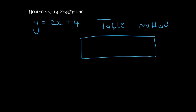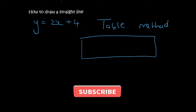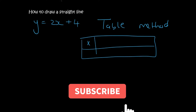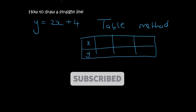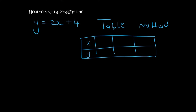As the name suggests, we will need a table. You then need x and y columns. You will then choose three points. For example, you could choose minus 2 as your x, 0 as your x, and 2 as your x.